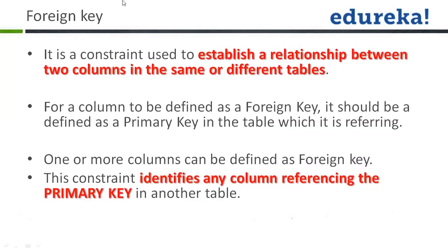We come to foreign key. It is a constraint used to establish a relationship between two columns in the same or different tables. For a column to be defined as a foreign key, it should be defined as a primary key in the table which is being referenced. One or more columns can be defined as foreign key. The constraint identifies any column referencing the primary key of another table. That means you have a primary key in one table and if you find all those values in the second table as well, then that column in the second table is actually the foreign key of the first table.